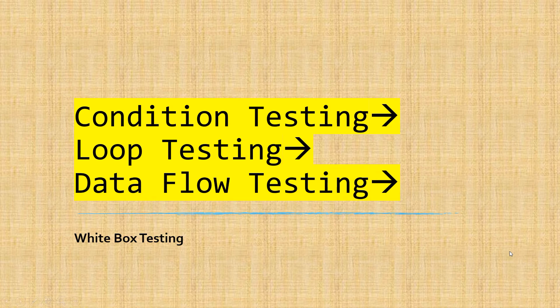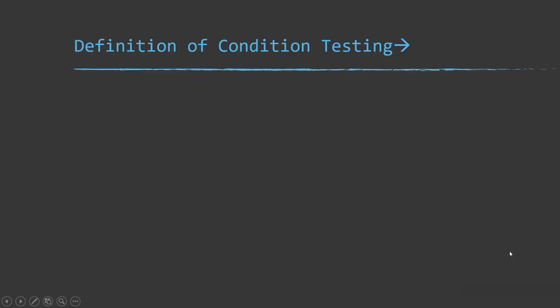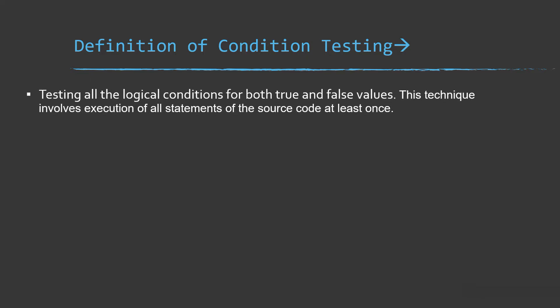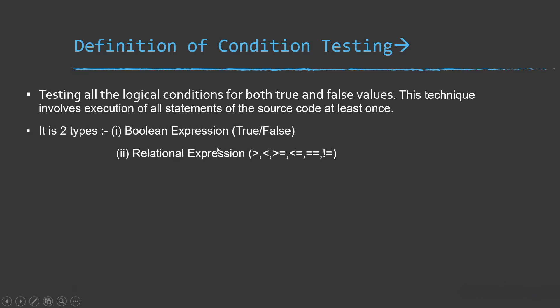So first, what is the definition of condition testing? Condition testing is like testing all the logical conditions for both true and false values. This technique involves execution of all statements of the source code at least once. It is of two types: expression, which always returns true or false values, and relational expression, which includes operators like greater than, less than, greater than or equal to, less than or equal to, equal to, and not equal to.